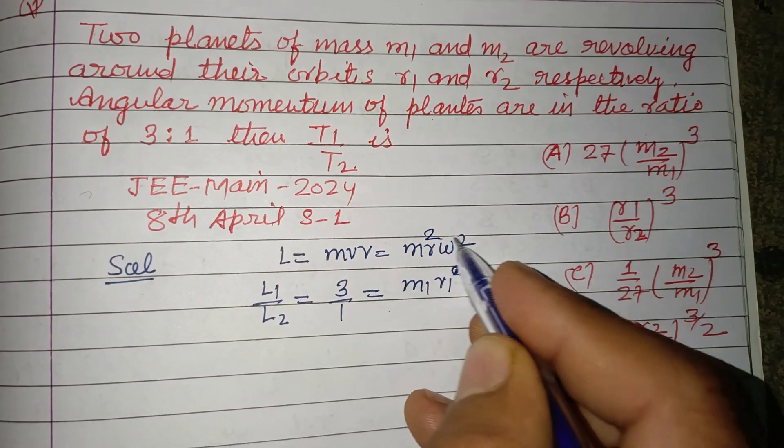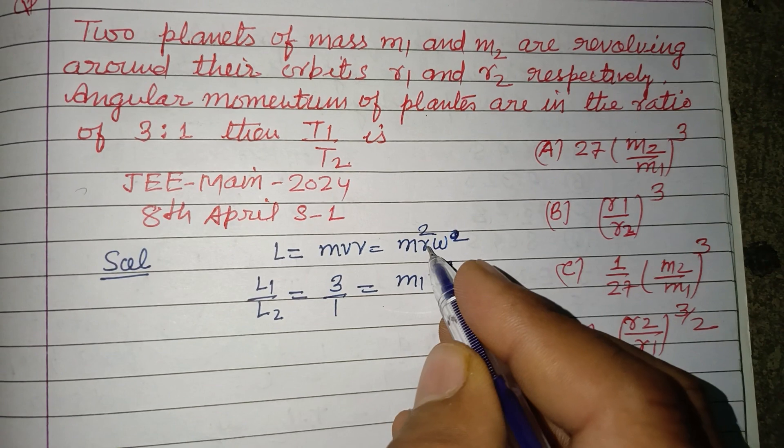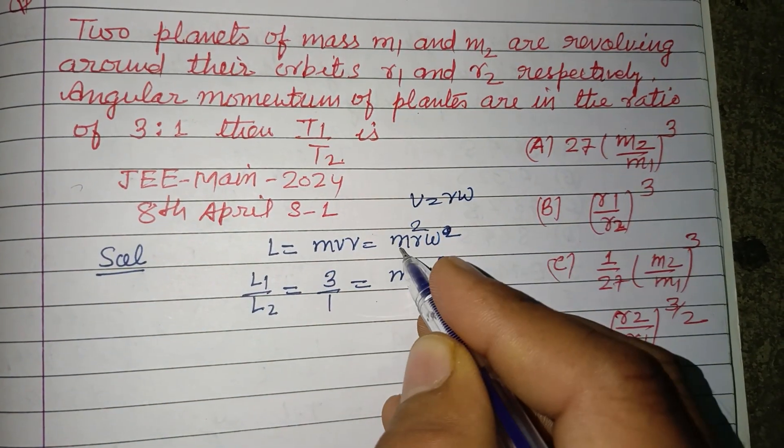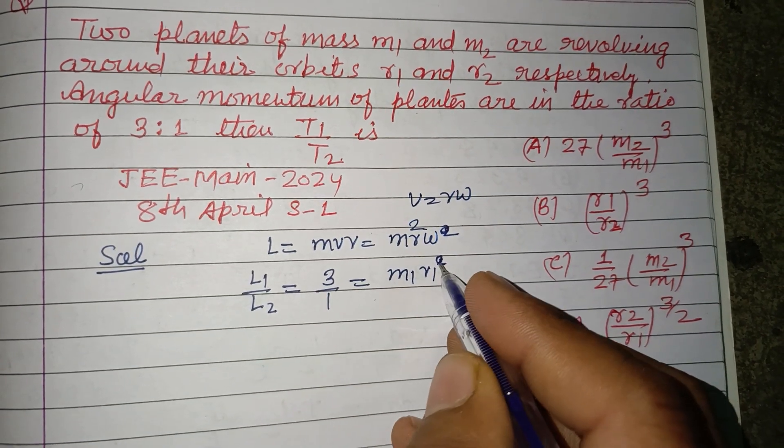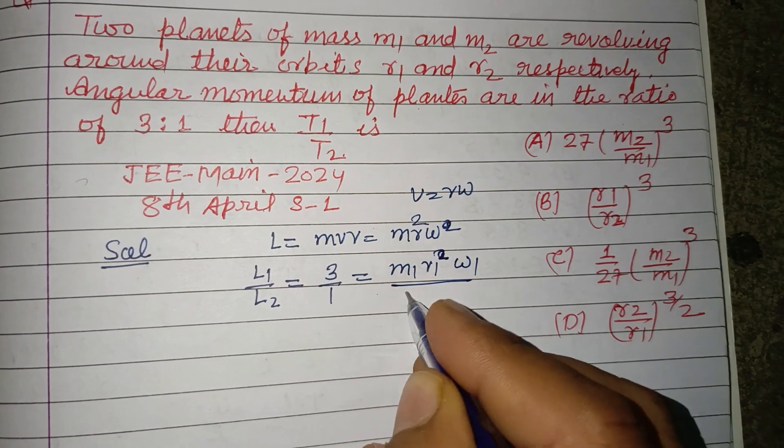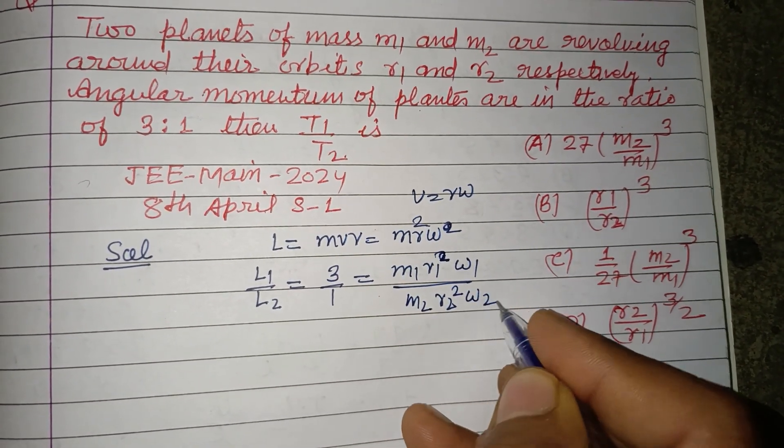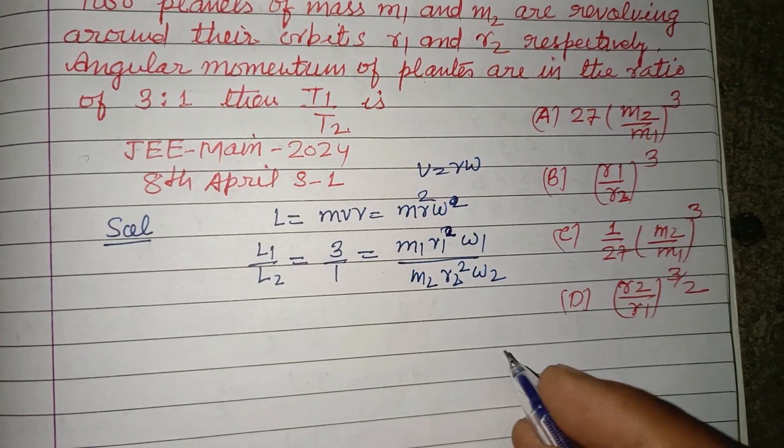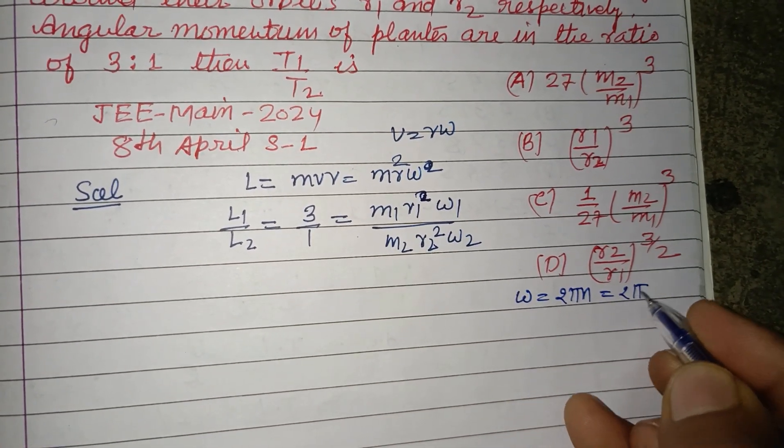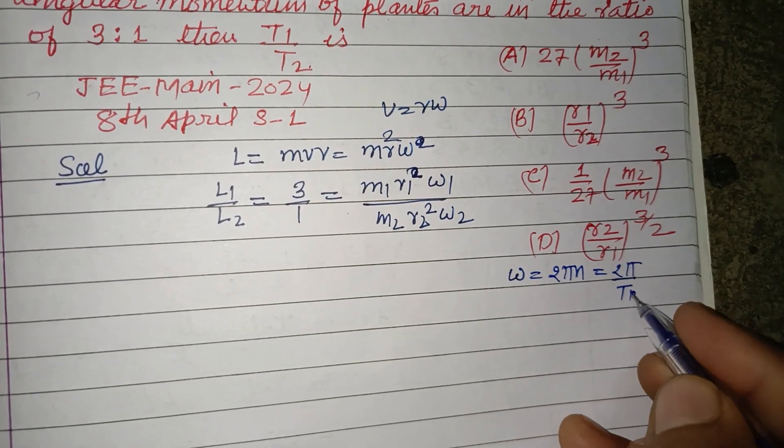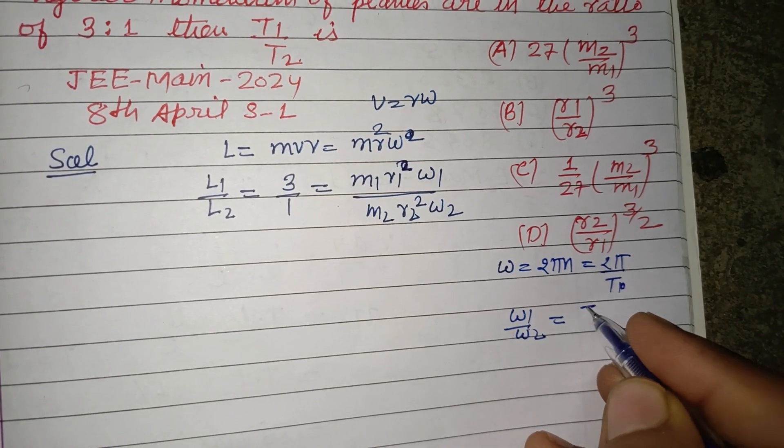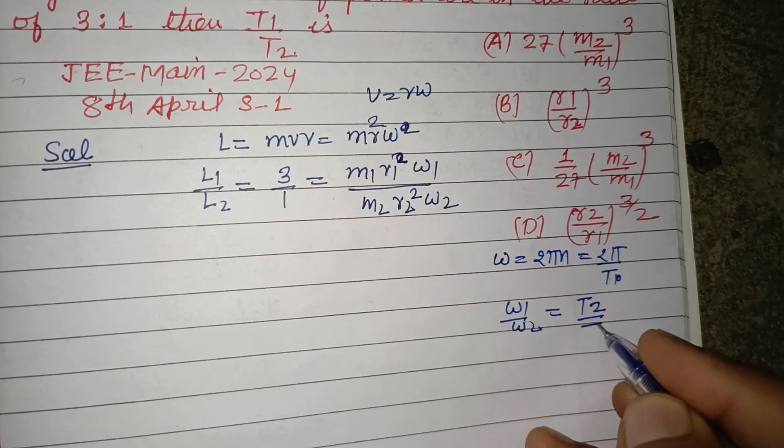Here MR² not omega, so MR²ω equal to Rω, you know this. So when we put here MR²ω, M1R1²ω1 upon M2R2²ω2. And you know that ω equal to 2πN or 2π/T. So this is ω1 upon ω2 equal to T2 over T1.